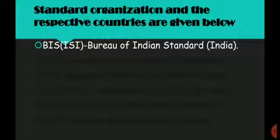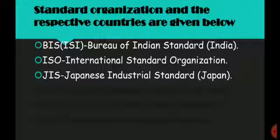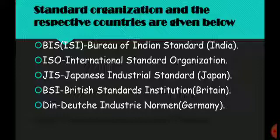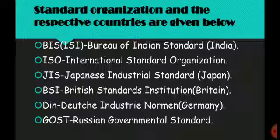Standard organizations and their respective countries are given below: BIS (ISI) - Bureau of Indian Standard. ISO - International Standard Organization. JIS - Japanese Industrial Standard. BSI - British Standards Institution. DIN - Dutch Industry Nomen. GOST - Russian Governmental Standard.